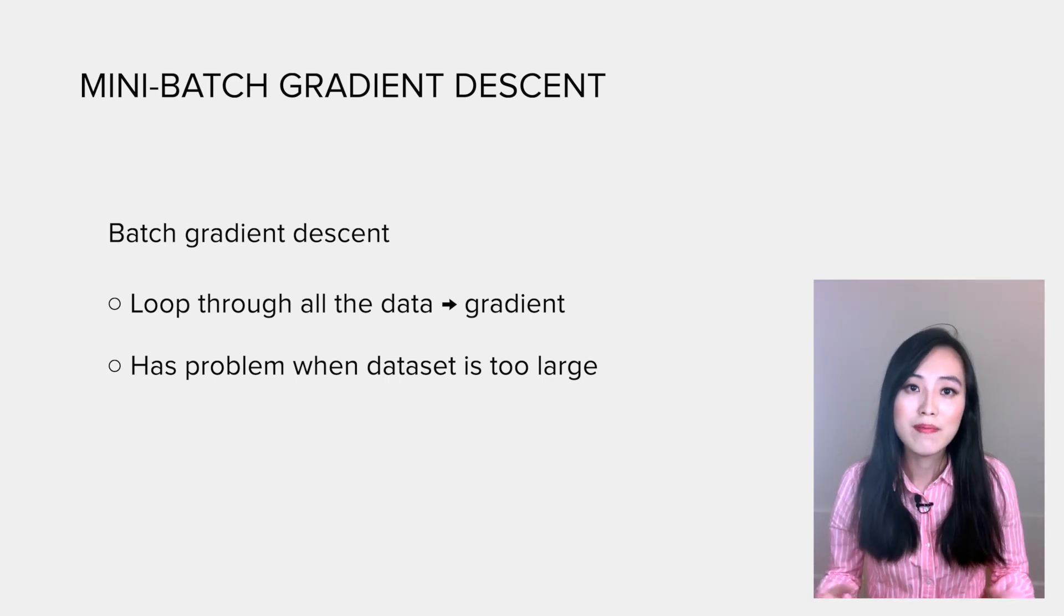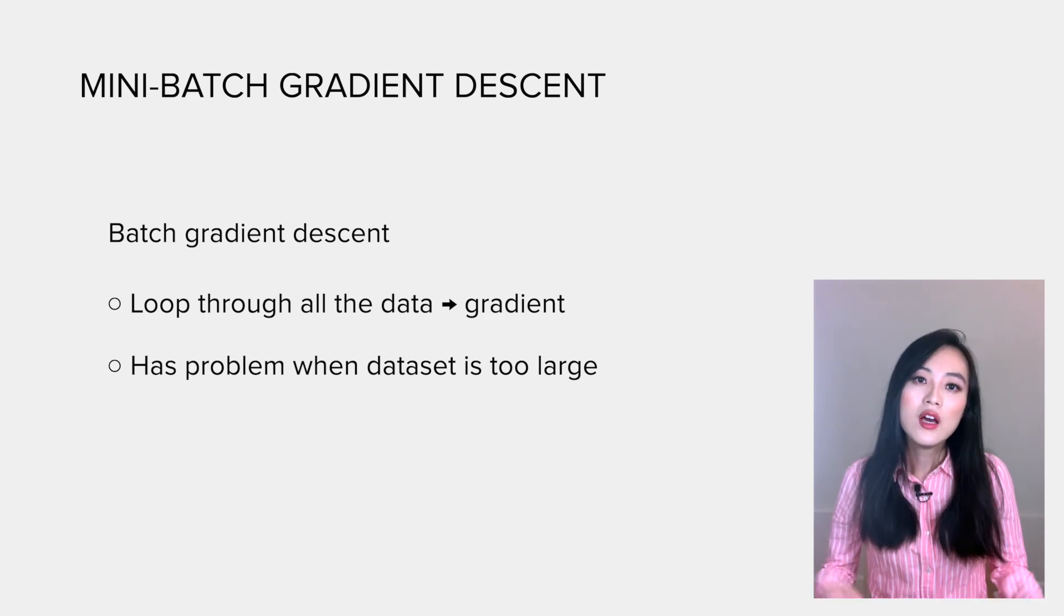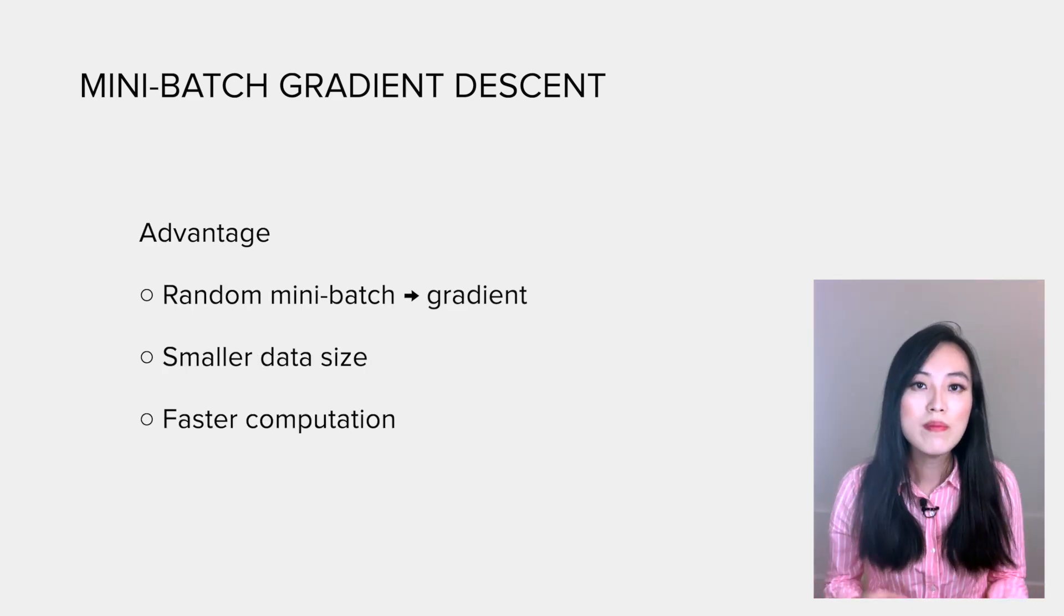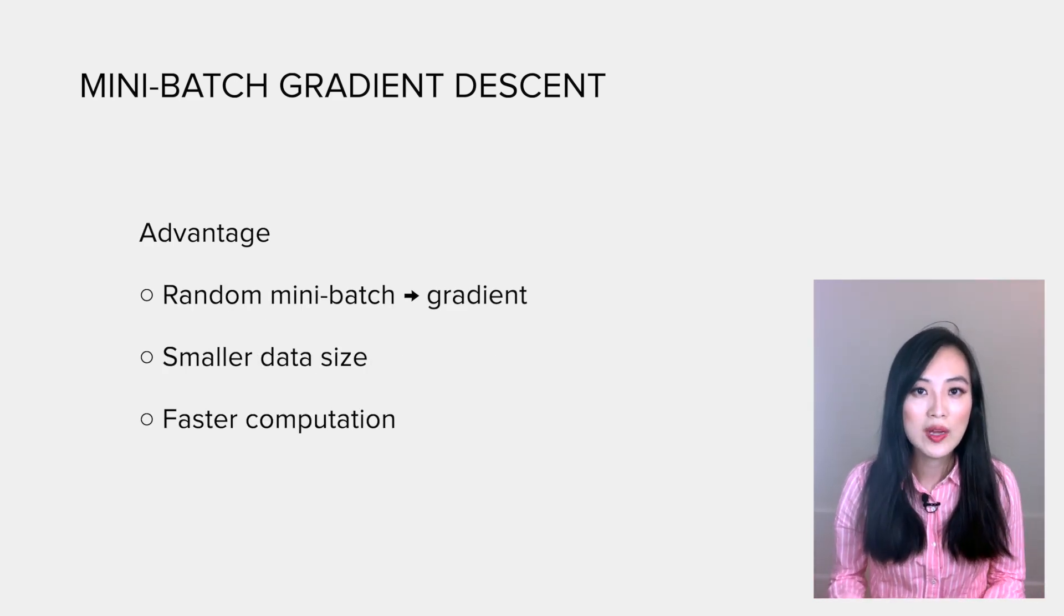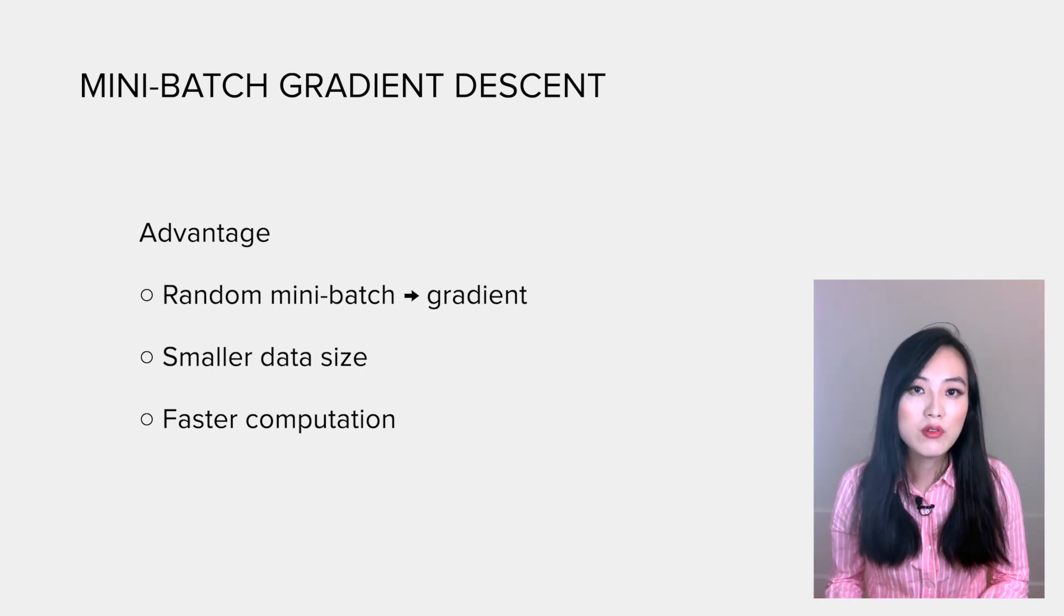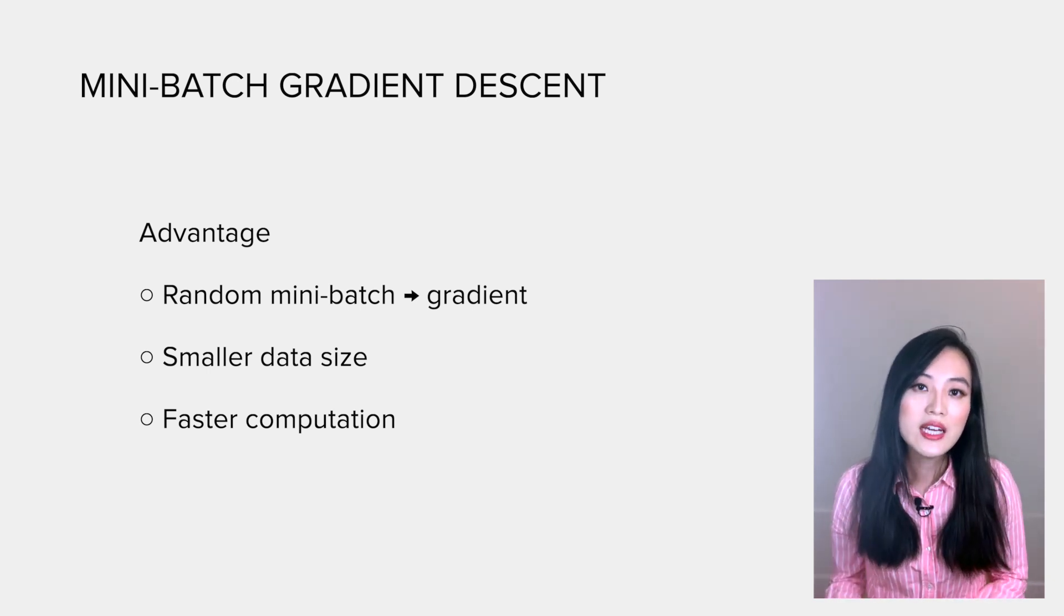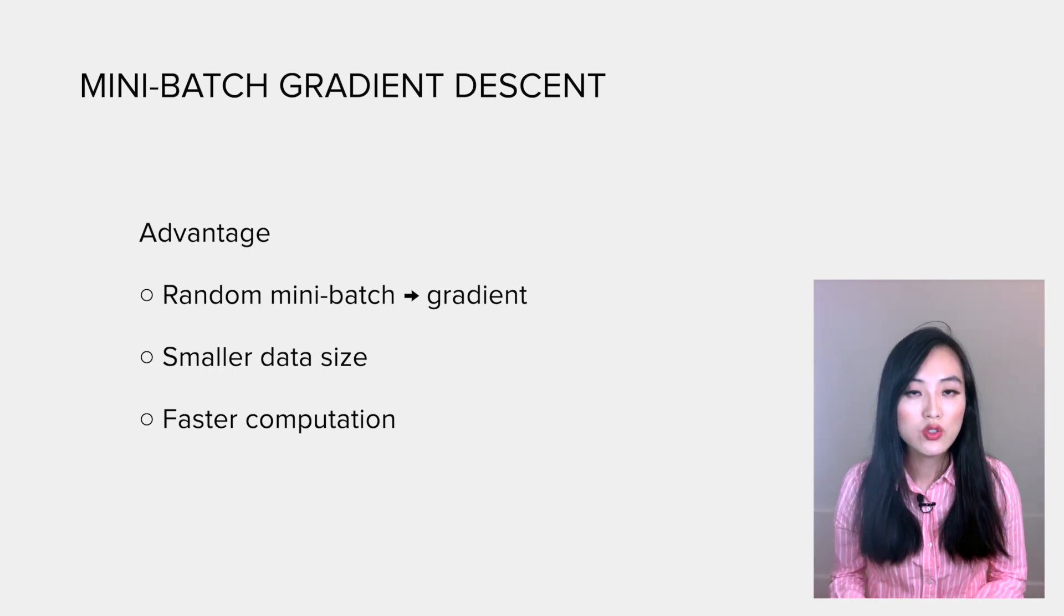So how to improve it? One method is called mini-batch gradient descent. It takes a random mini-batch from the entire data set and computes the gradient from it. In this way, the data is much smaller and it could fit into memory, and getting the gradient becomes faster.